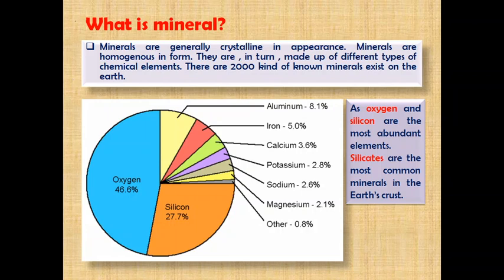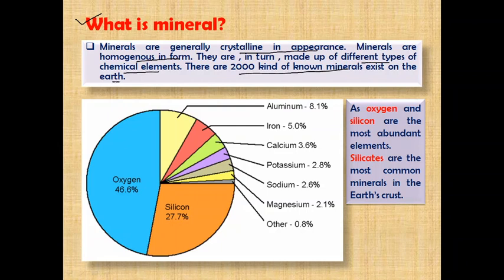Now, what is a mineral? Minerals are generally crystalline in appearance, homogenous in form, and are in turn made up of different types of chemical elements. So substances which are made up of different types of chemical elements are called minerals. We can say a mineral is a compound. There are 2,000 kinds of known minerals that exist on the earth.